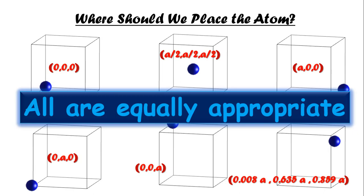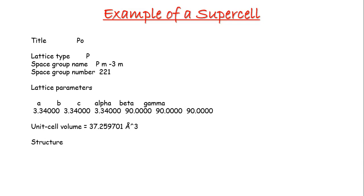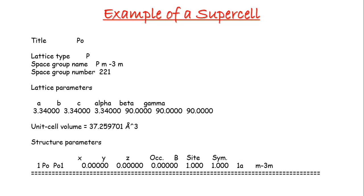Here is an example of a supercell. The format may vary a little based on the program or software you use, but the overall structure remains more or less the same. This is your material name — in this case, polonium. When your material has more than one element, you just provide different element names. These are the lattice parameters, usually defined in Ångström units, and here you have the angles alpha, beta, and gamma. Since polonium is cubic, all angles are 90 degrees. You also provide the total number of atoms within the cell — here I have taken just one unit cell. If your structure contains 144 atoms, you add 143 more rows below.